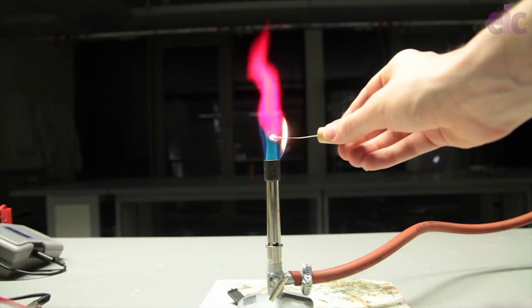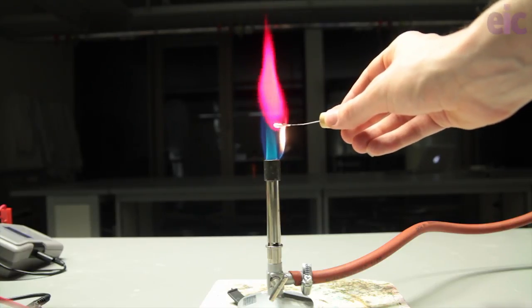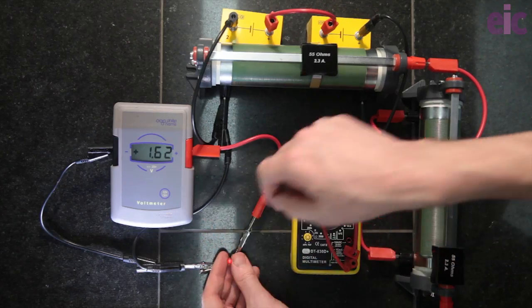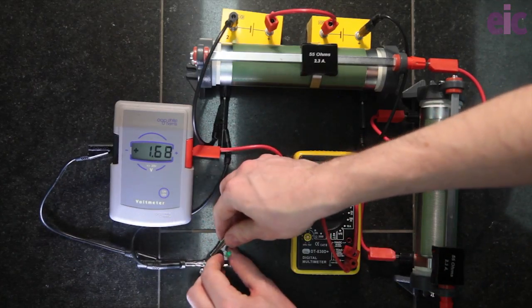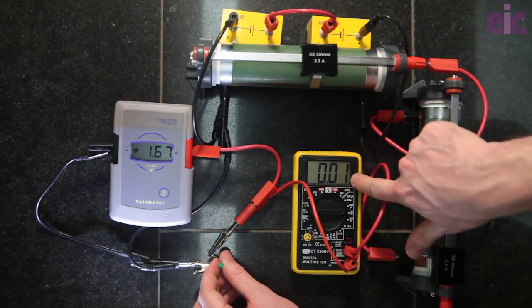Flame tests and their line spectra are a popular way of showing evidence for the quantised nature of the atom, but sometimes you want something even simpler to demonstrate a complex idea, such as a coloured LED lighting up, or not. This month we're going to look at what LEDs can teach us about electronic transitions.